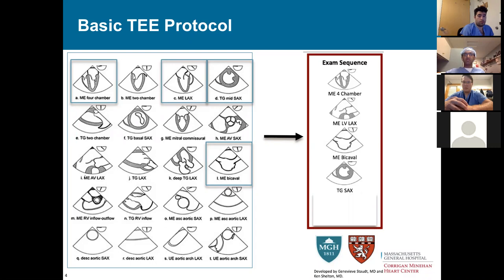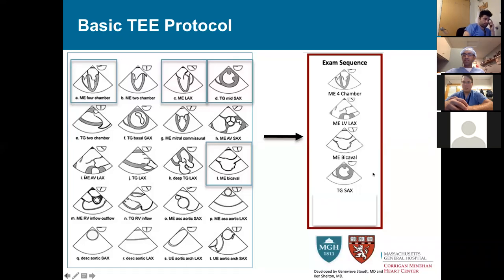Starting with TEE, there are four basic views: the four-chamber view — you'll notice the right atrium is kind of cut off, and we'll talk about that — the mid-esophageal long axis view, the mid-esophageal bicaval view, and the short axis view. We're just going to start with those four basic TEE views.